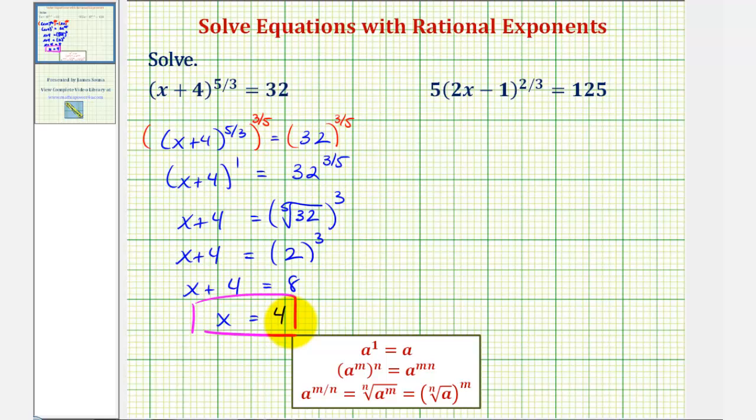Now, looking at our second equation, notice how this 5 is not being raised to the two-thirds power. So our first step is to divide both sides of the equation by 5.